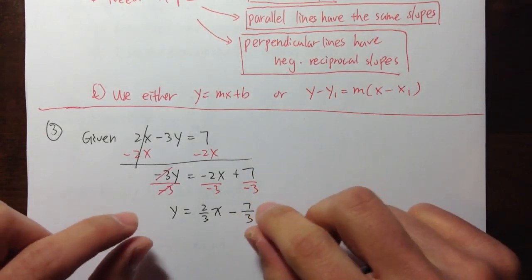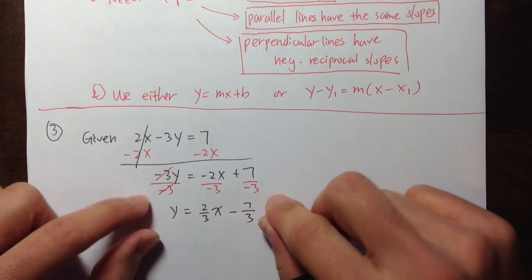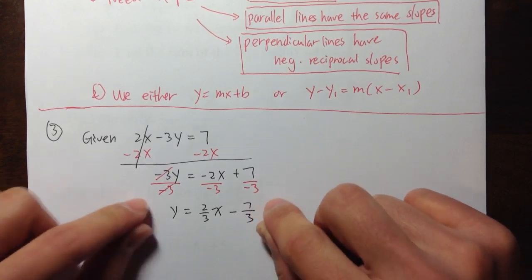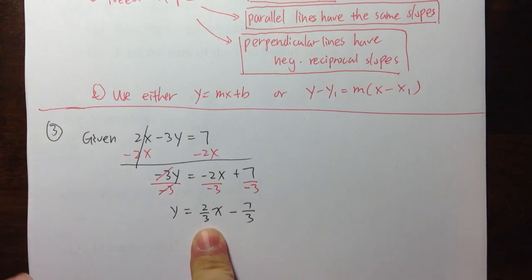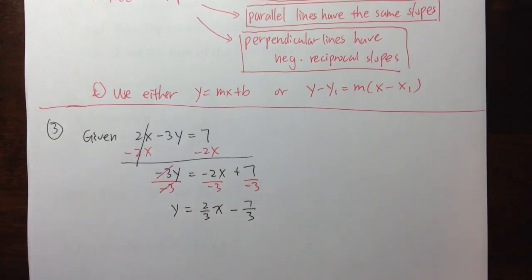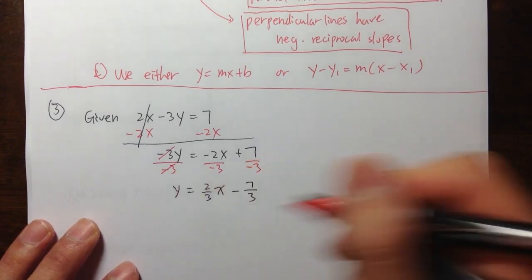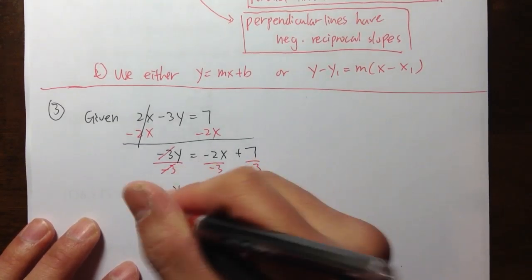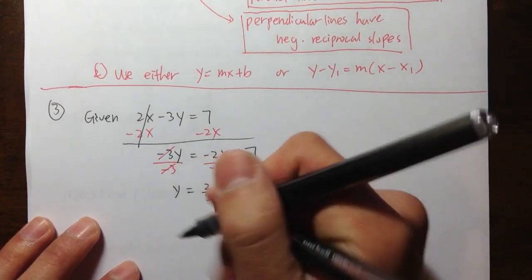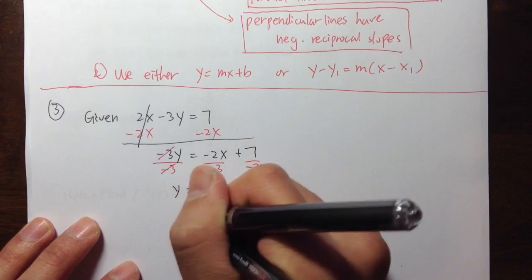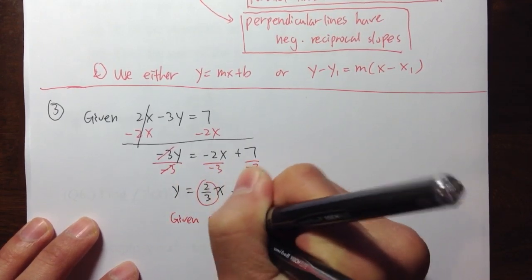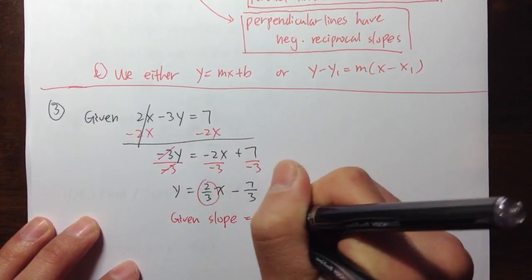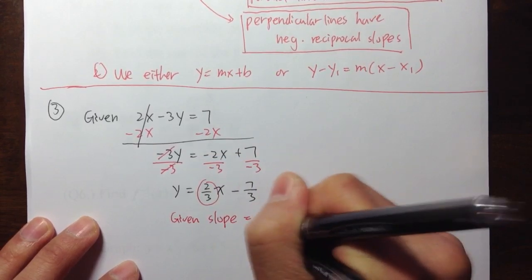This is the given line, and the number in front of x is the slope of the given line. So the given slope is equal to 2 over 3.